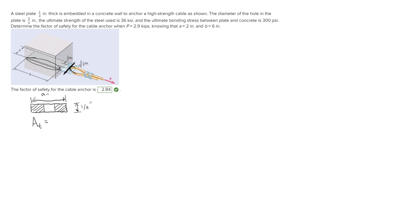To find the area in tension, we have 0.25 inches times the length a of 2 inches minus the diameter of the hole which is 0.75 inches. When we multiply these out, the area in tension is 0.3125 inches squared.